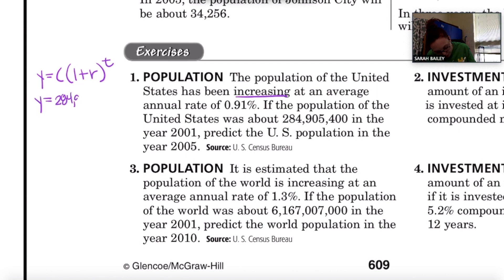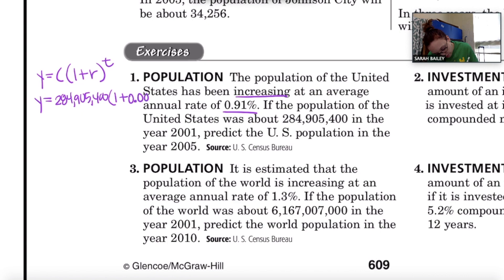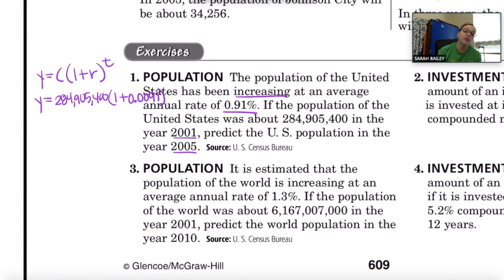So we write: y equals c times (1 plus r) to the t power. The c is our initial amount — the initial population — so that's 284,905,400. Times (1 plus r): my rate is 0.91%, which written as a decimal is 0.0091.